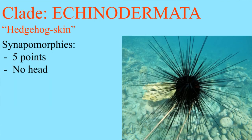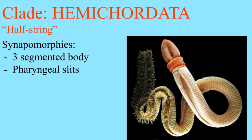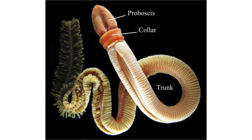The echinoderms all have five points and no head. The very Freudian hemichordates are divided into three segments.